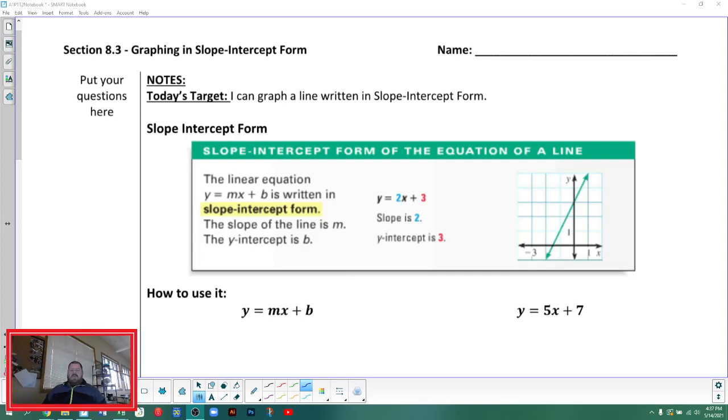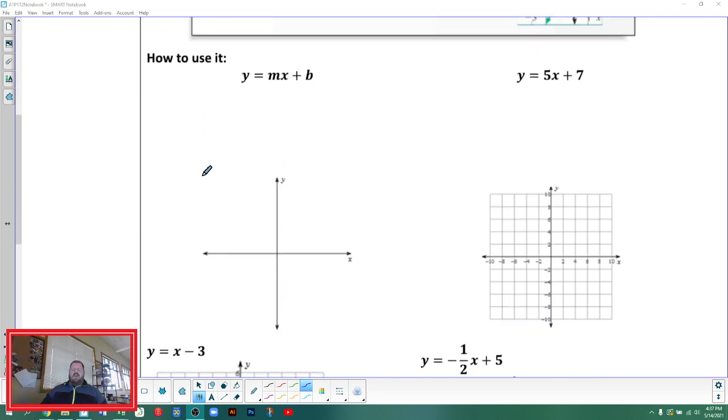Hello and welcome to the section 8.3 lecture today. Today we're graphing lines in slope-intercept form, by far our best form of a line to graph. Slope-intercept form of a line is a linear equation written as y equals mx plus b, where m is the slope and b is the y-intercept. There will be numbers in for m and b, and the way we want to use it is we want to go to our graph.